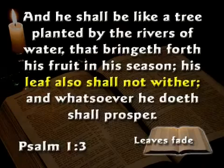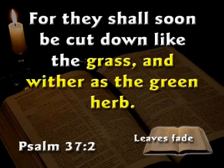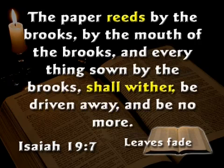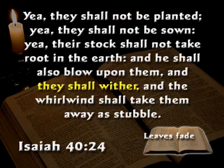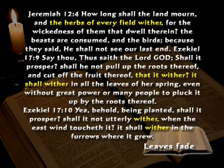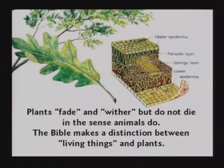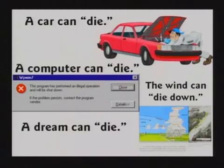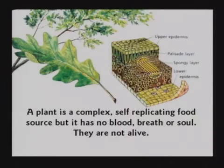Leviticus 17 talks about the life of the flesh being in the blood — plants don't have blood. Leviticus 17:13 says 'the life of all flesh is the blood thereof.' All through Scripture, plants fade and wither — they don't die in the sense that humans or animals die. A car can die. A computer can die. A dream can die. That's not the same kind of death. No, plants are not alive. A plant is a complex, self-replicating food source, but it's not alive.